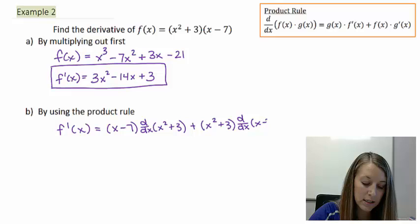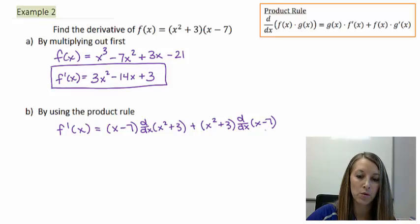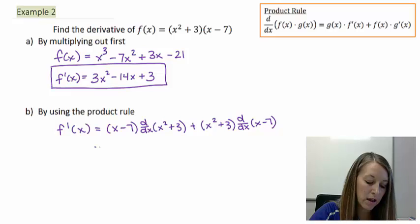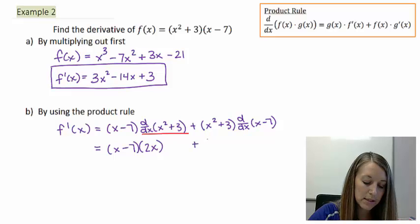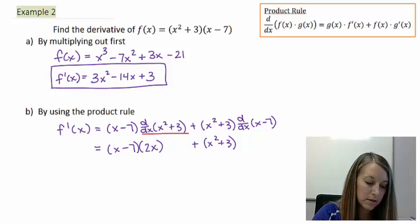So now let me take those derivatives. Copy down my x minus 7. The derivative of this guy here is 2x plus x squared plus 3 times the derivative of this here, which is actually just 1.